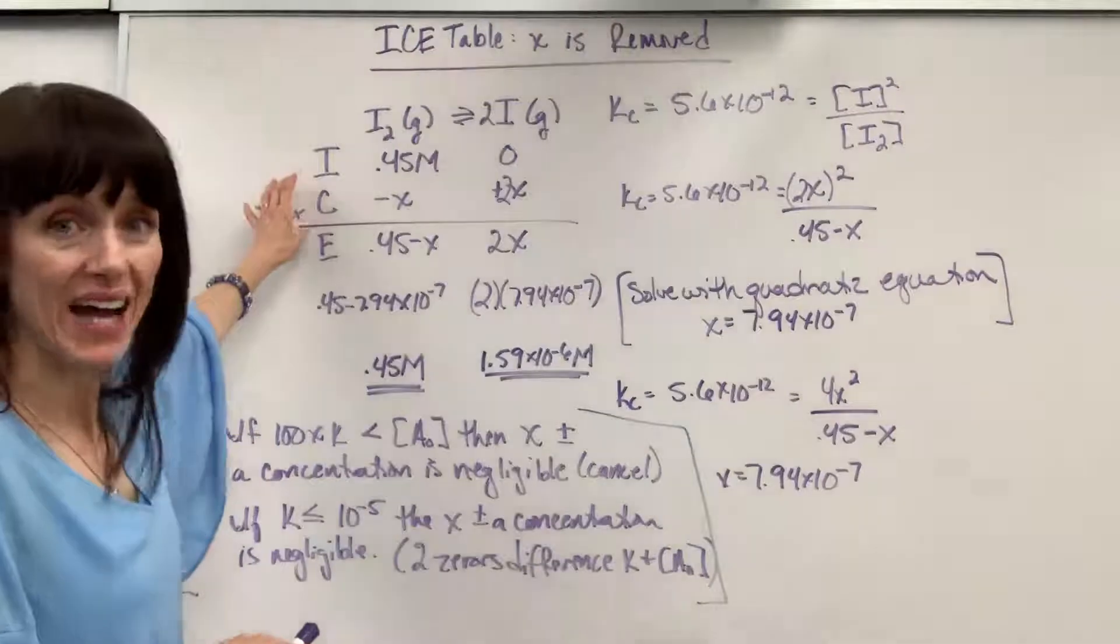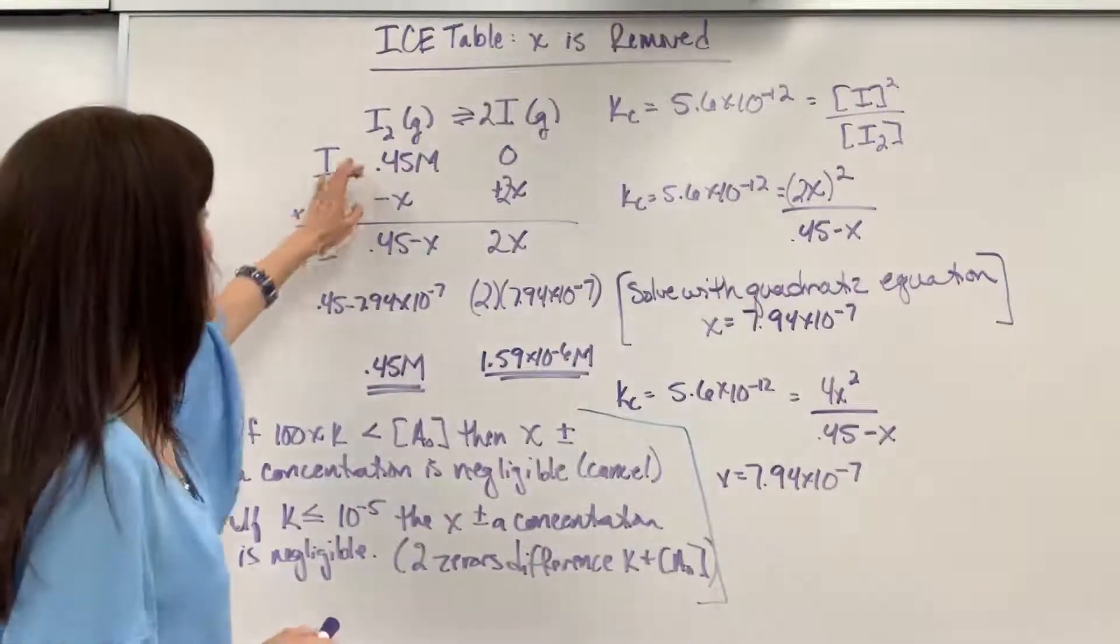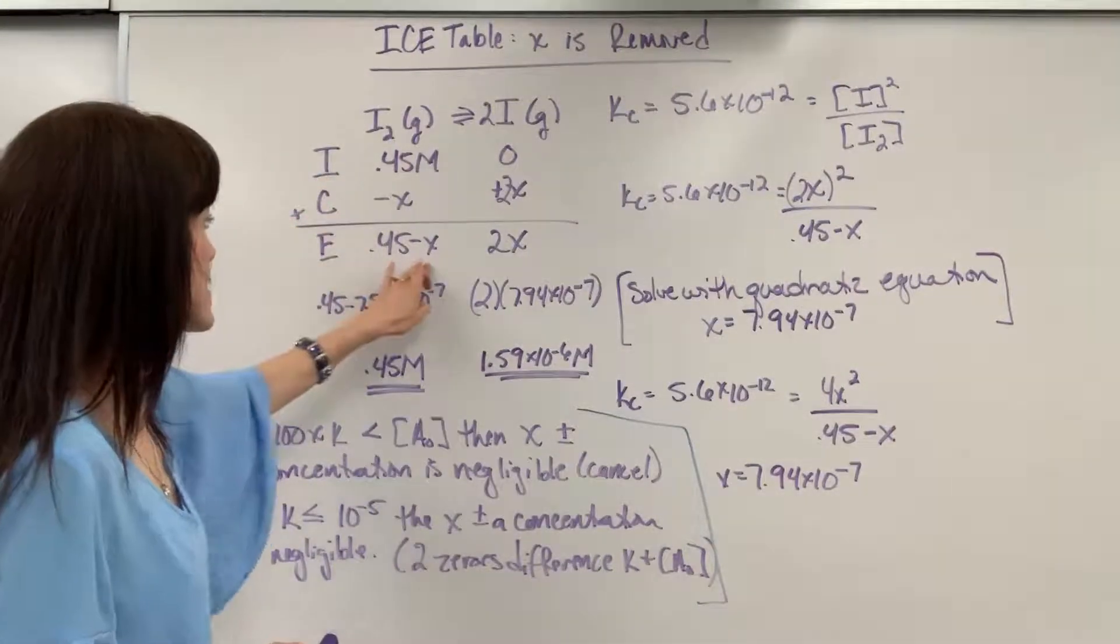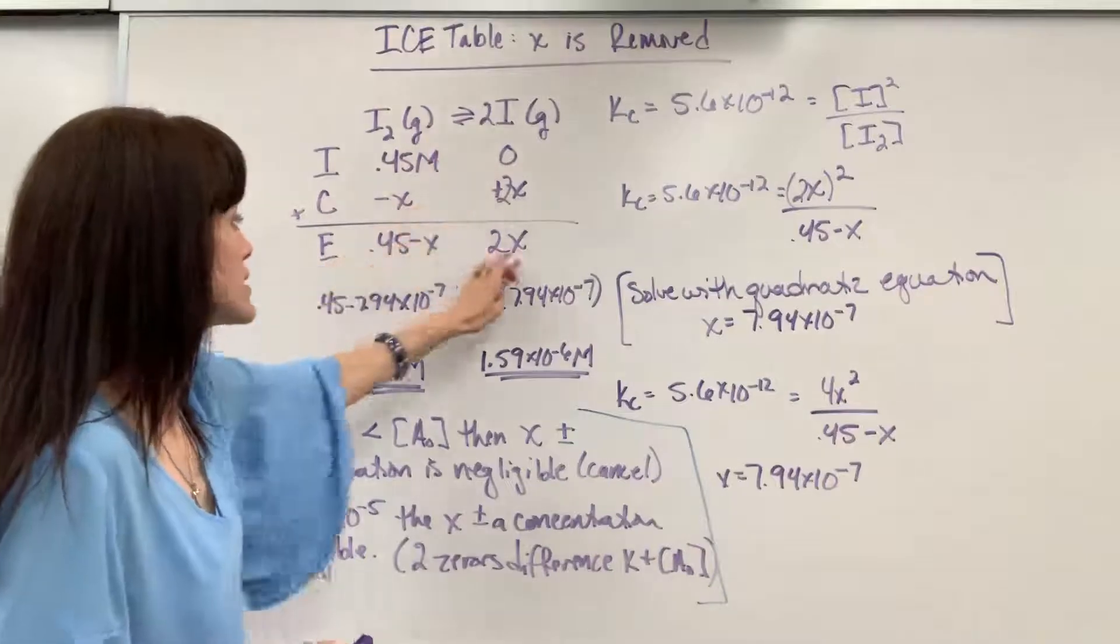So one mole is consumed for every two moles that are produced. E, super easy, just add I plus C. We're going to get 0.45 minus x, there we go. Zero plus 2x is 2x.